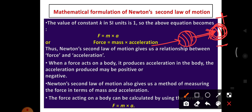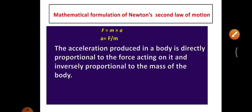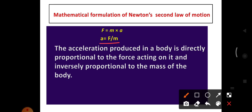Newton's Second Law also gives a method of measuring force in terms of mass and acceleration. When we multiply mass and acceleration, we get the value of force. From F = MA, if we rearrange, we get A = F/M. From this relation, we can say that acceleration and mass are inversely proportional.